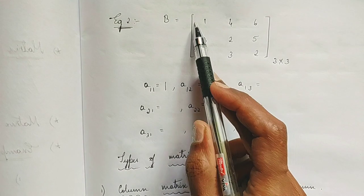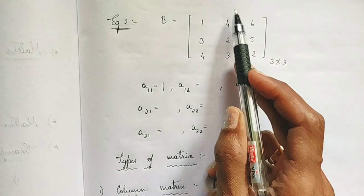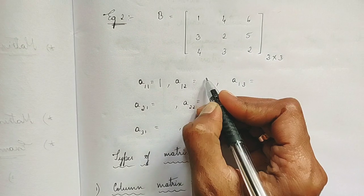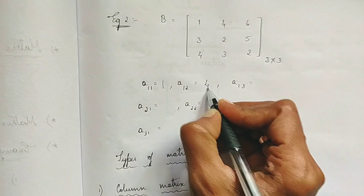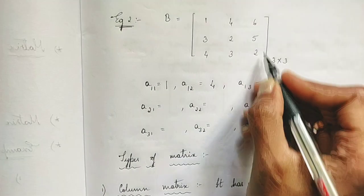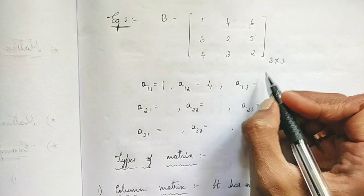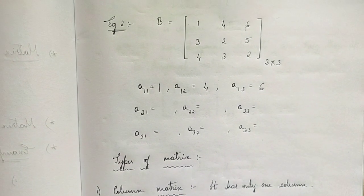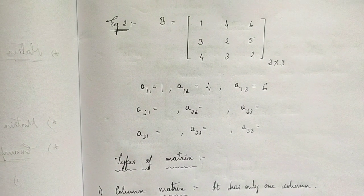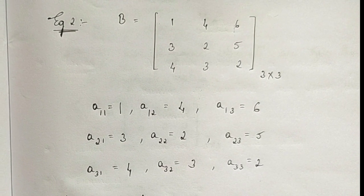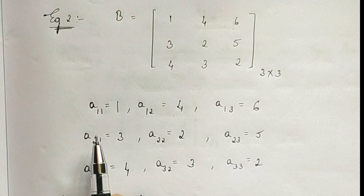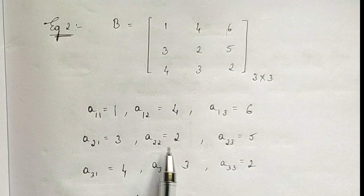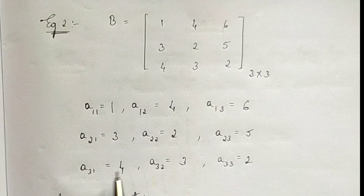a(1,1) is 1. Next a(1,2) — first row, second column — so that is 4. a(1,3) is 6. And so on. a(2,1) is 3. a(2,2) is 2. a(2,3) is 5.